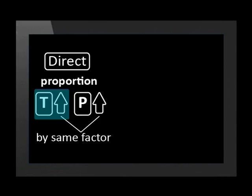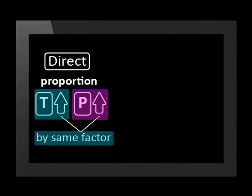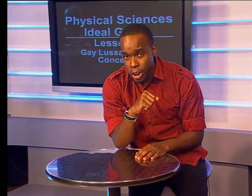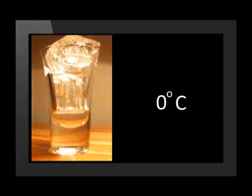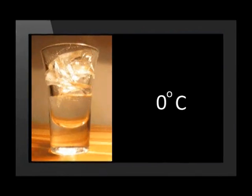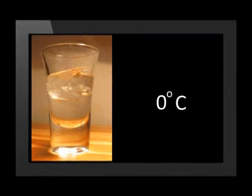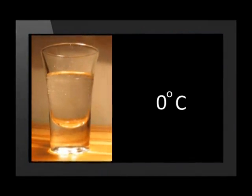Kelvin temperature increase causes a pressure increase by the same factor. Why is this? Why would a doubling in Kelvin temperature double the pressure, but not a doubling of degrees Celsius temperature? Nelly has told us that the Celsius scale uses a zero value which is not the lowest temperature possible. Zero degrees Celsius is the melting point of water — in other words, the temperature at which ice begins to change to liquid water.